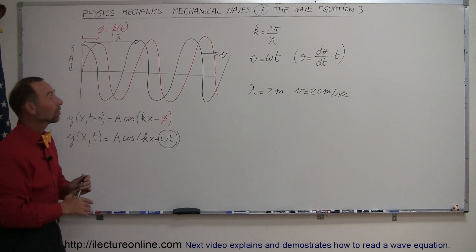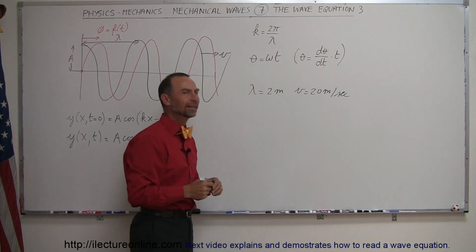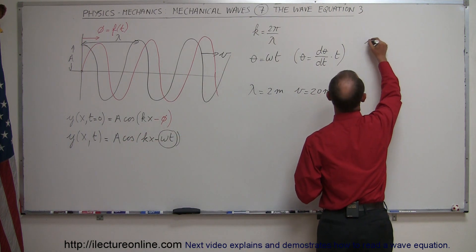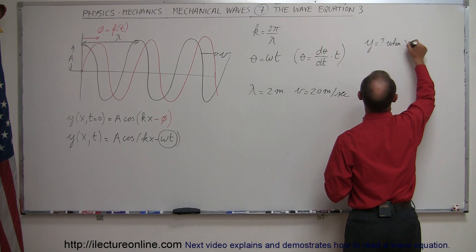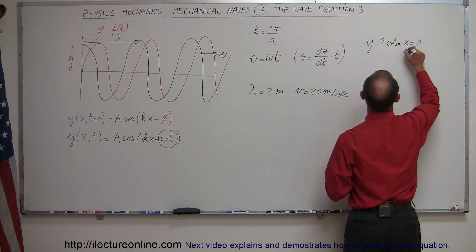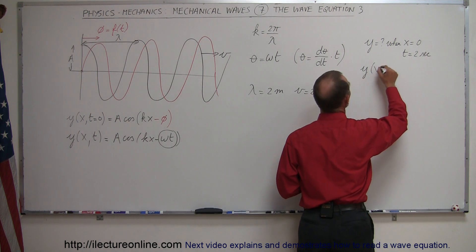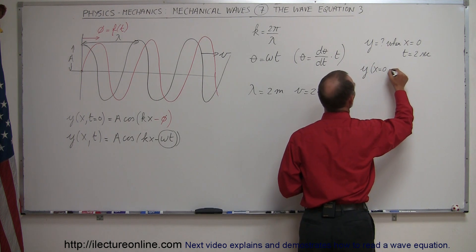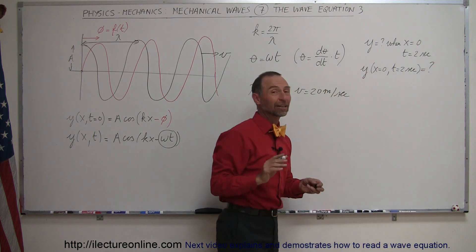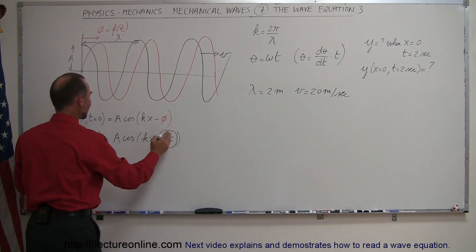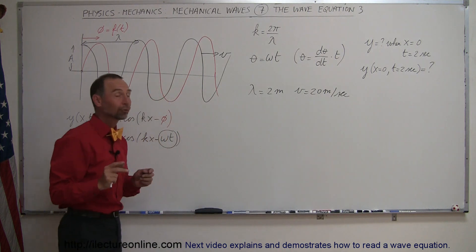Does this equation make sense? Let's do an example. Say we have a wavelength of 2 meters, velocity of 20 meters per second, and amplitude of 0.1 meters. We want to find the displacement y when x = 0 and t = 2 seconds. So we're going to find the equation for a wave traveling to the right at 20 m/s with a wavelength of 2 meters.